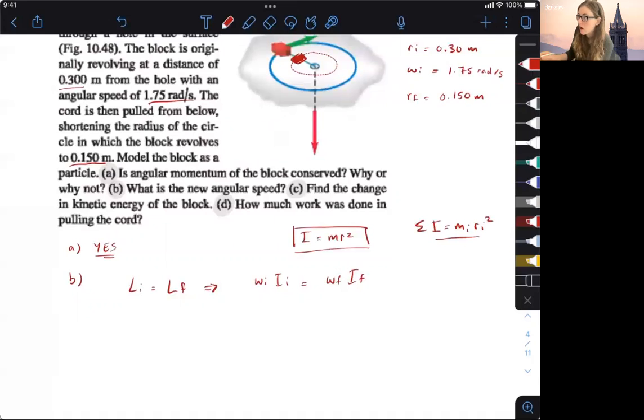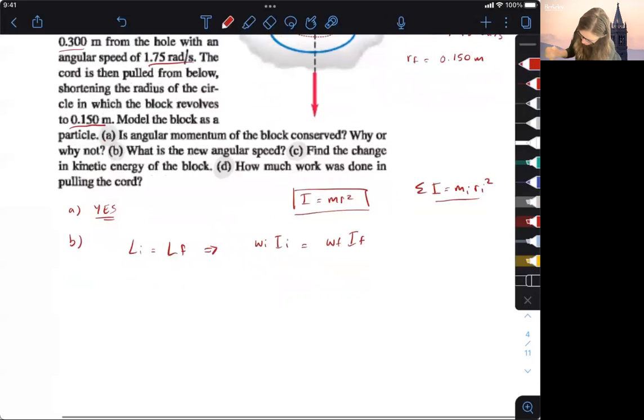So our mass moment of inertia for our initial block, we have WI times M of the block times RI squared is equal to WF times MB times RF squared. So we can cancel the mass from both sides.